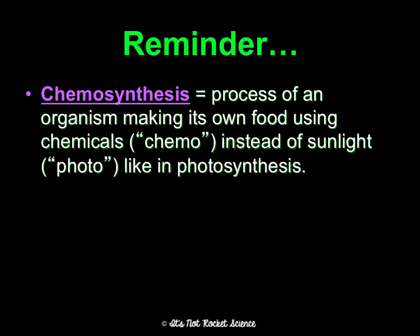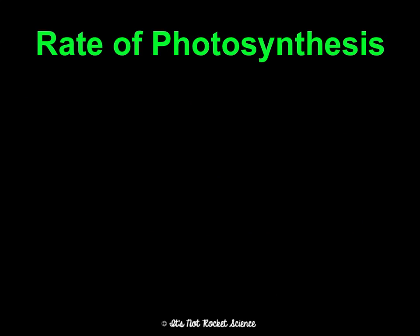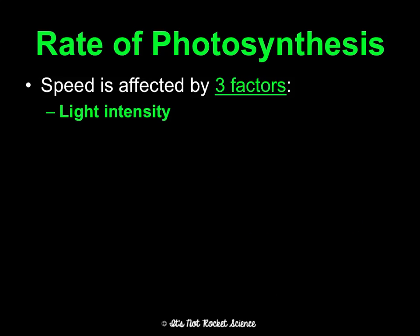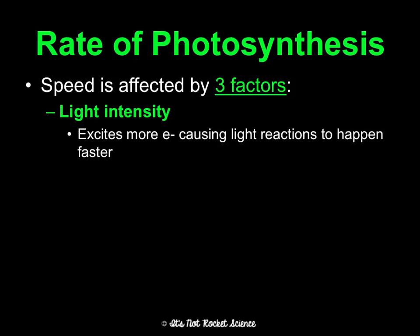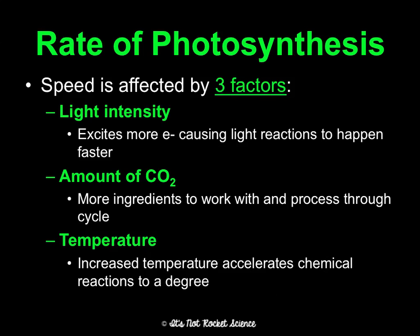Remember, not all producers do photosynthesis — some can do chemosynthesis and make food from chemicals. But the majority of producers use this process. The rate of photosynthesis is affected by three things: light intensity — more intense light excites electrons more, speeding up the light-dependent reaction; carbon dioxide concentration — more CO2 means more ingredients, so the reaction can happen faster; and temperature — higher temperatures increase kinetic energy and particle collisions. However, extreme temperatures can denature enzymes, which is harmful.